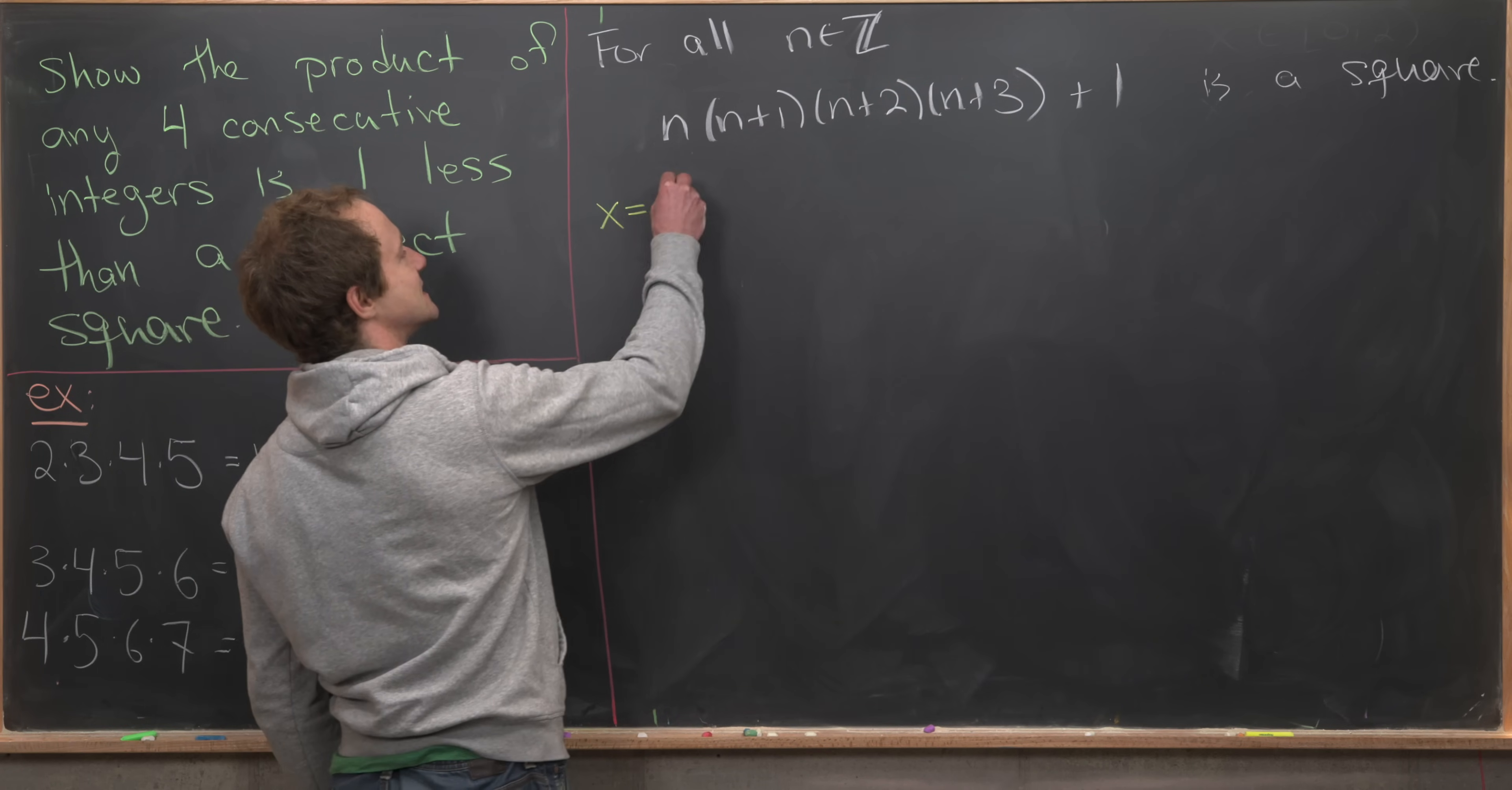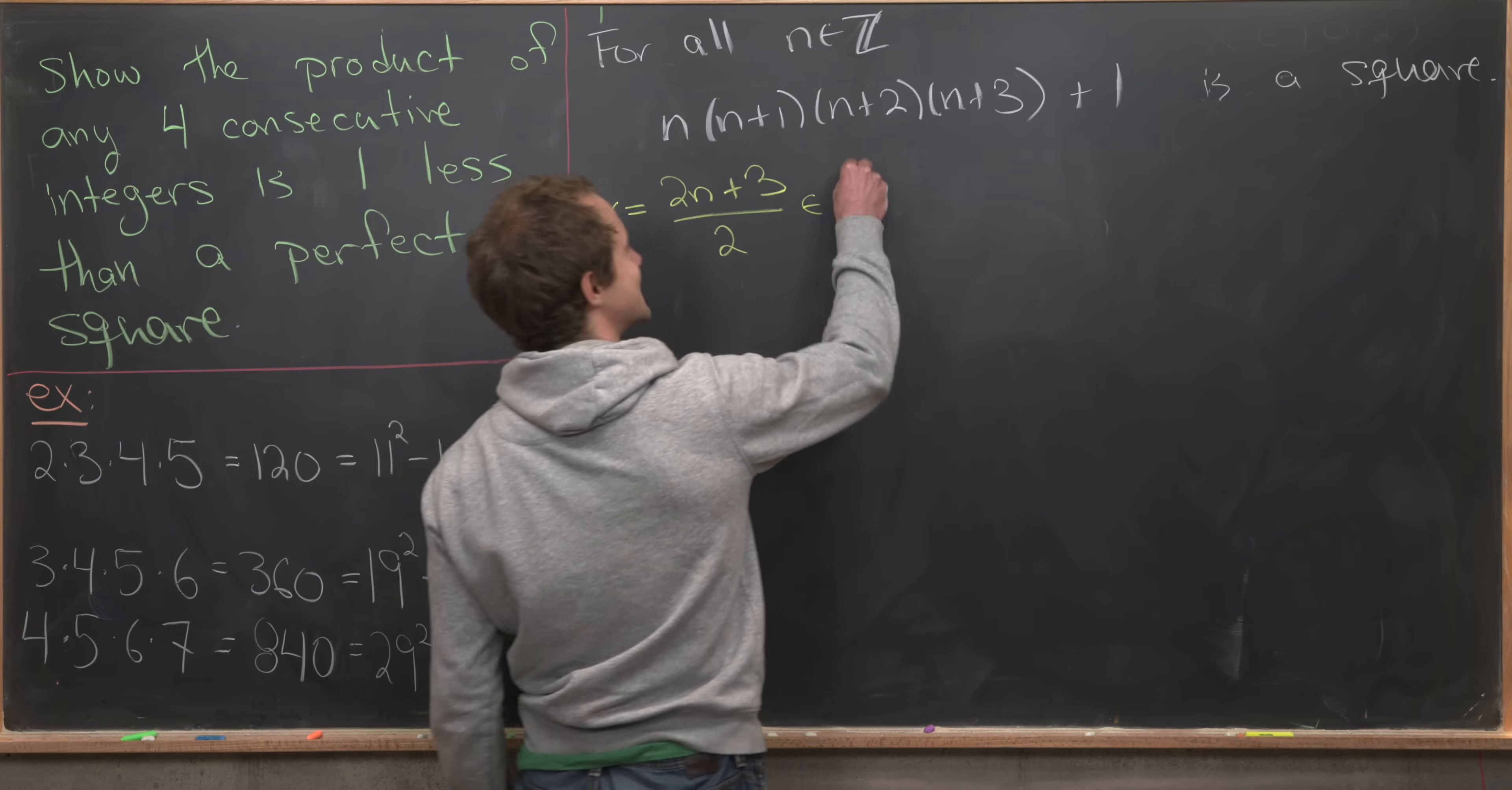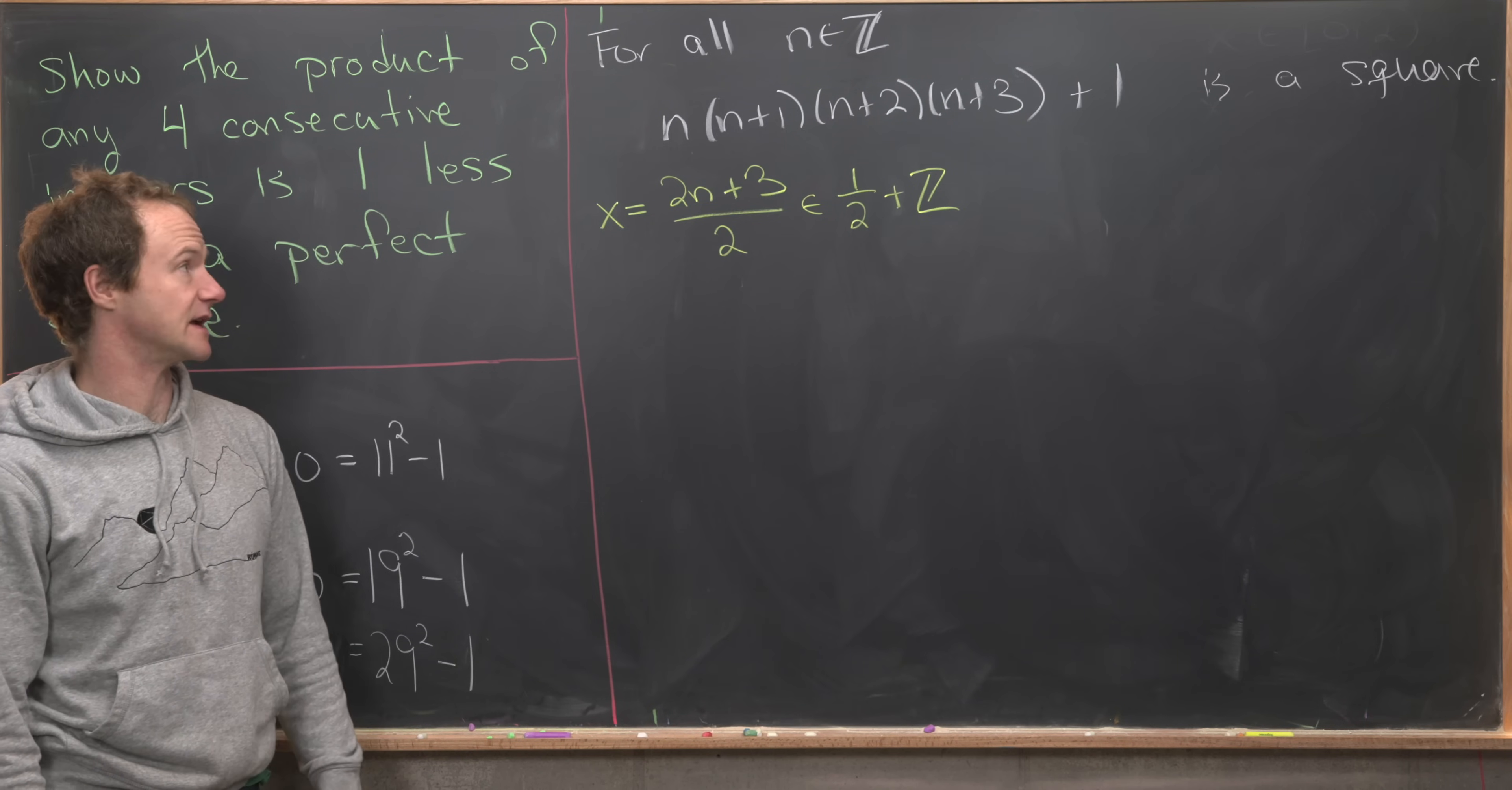Let's set x equal to (2n+3)/2. So that means x is in 1/2 plus Z. In other words, it's not quite an integer, it is one half away from being an integer.